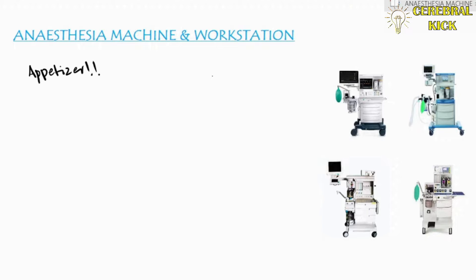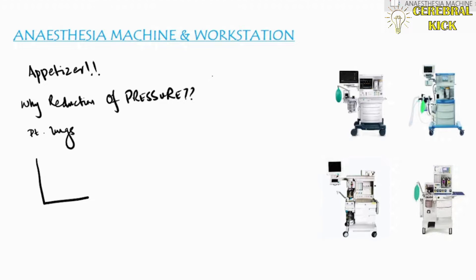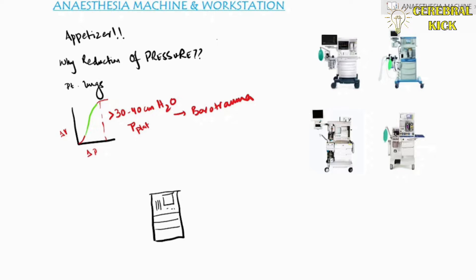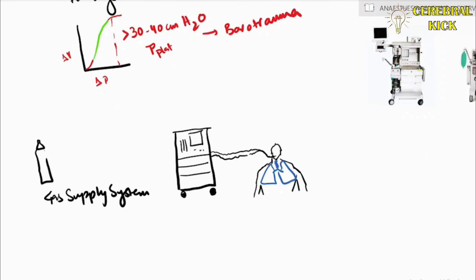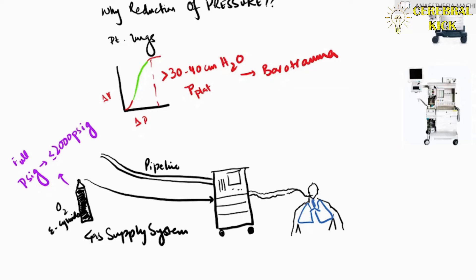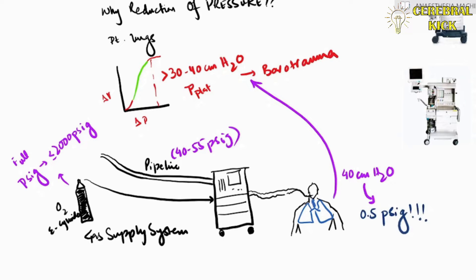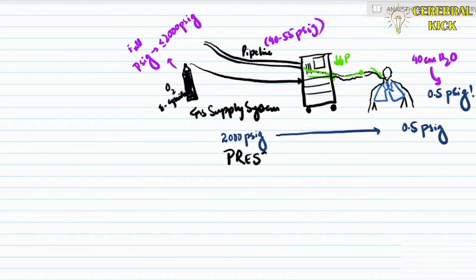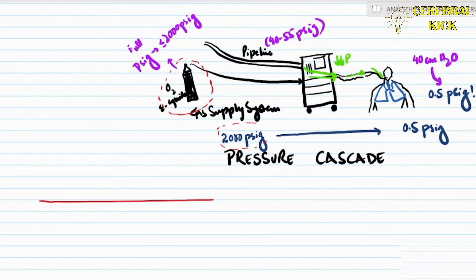The anesthesia machine is divided into various pressure zones. Why do we need to reduce the pressure? The patient's lungs cannot tolerate pressures greater than 30 to 40 centimeters of water. On the back side there are oxygen cylinders carrying a very high pressure of 2000 PSIG, and the pipeline pressure of 45 to 55 PSIG. If you convert 30 to 40 centimeters of water barotrauma pressure in the lungs, it accounts to only 0.5 PSIG. So we have to reduce pressures from 2000 PSIG to 0.5 PSIG to prevent barotrauma. Drawing the pressure cascade anatomically, there would be three zones: the high pressure zone, the intermediate pressure zone, and the low pressure zone.